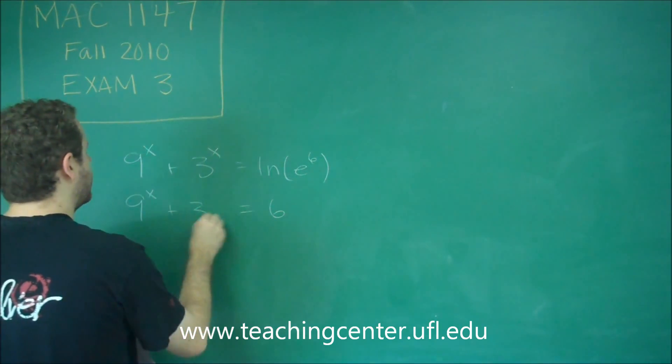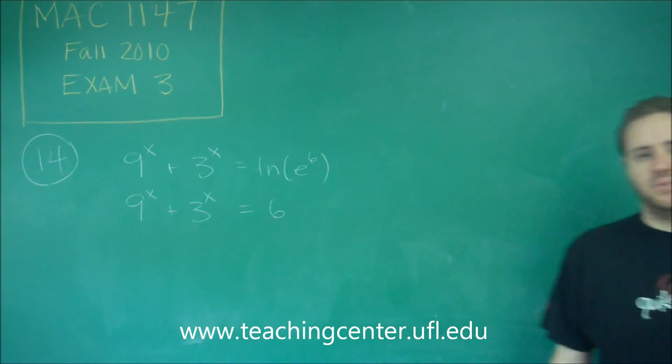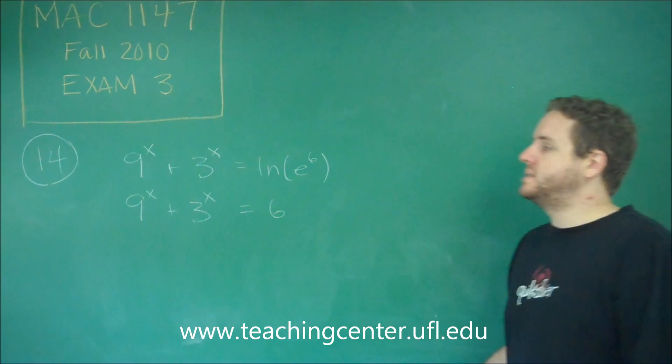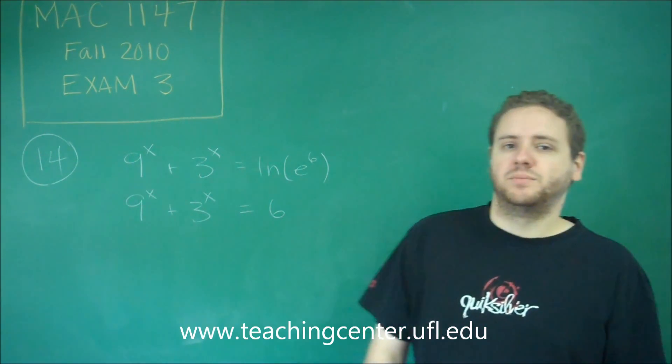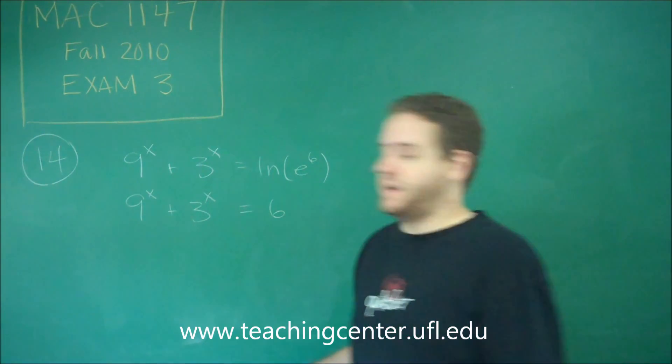But writing these as 9^x + 3^x right now does not help us. We can't really solve that as written. What you should always aim to do if you have multiple exponential terms is try to get them to be the same base. We can definitely do that here because 9 is 3 squared.